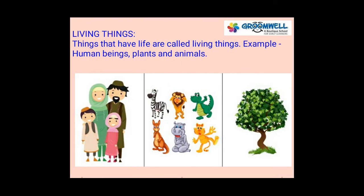Living things. Things that have life are called living things. For example, human beings, plants and animals. Anything that is alive, grows, breathes and has babies is called a living thing. There are three types of living things: humans, plants and animals.